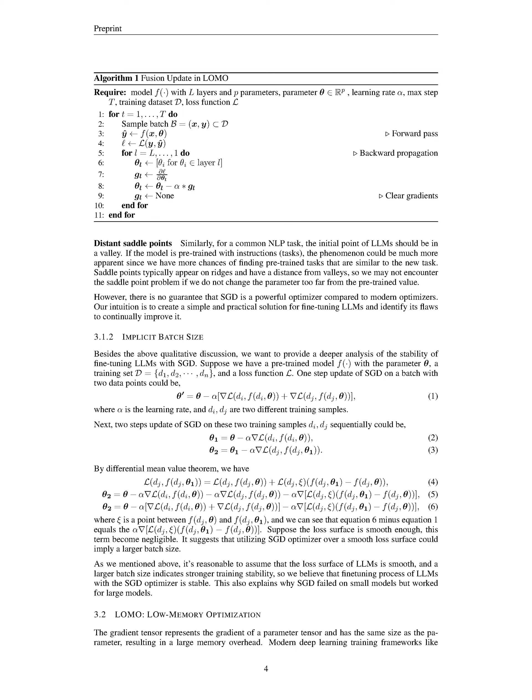In addition, we have a function that computes the loss, or the discrepancy between the model's predictions and the actual data, referred to as L. Suppose we want to update our model using SGD with a batch of two data points. The formula for this update would involve subtracting from our existing parameters theta the product of a learning rate alpha and the sum of the gradients of our loss function computed at the two data points.